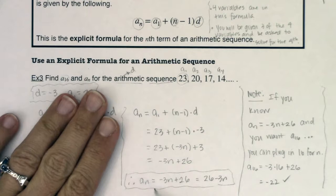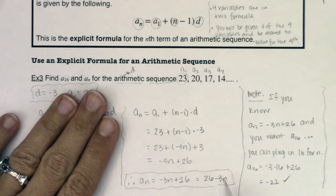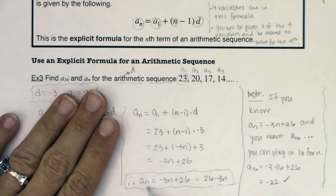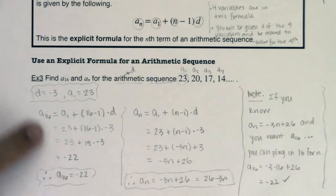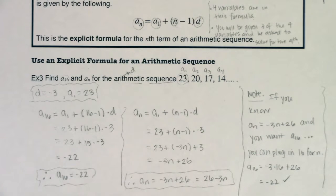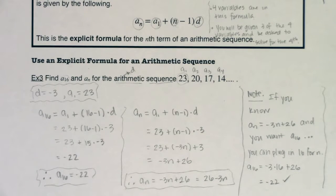The advantage of finding a_n is that I could find more than just a_16 — I could find a_17, a_18, even a_7000. That's the advantage of the explicit formula: once you have it, you can plug in any n value. We're going to practice using that formula many times until we feel more comfortable with it. See you in a few.